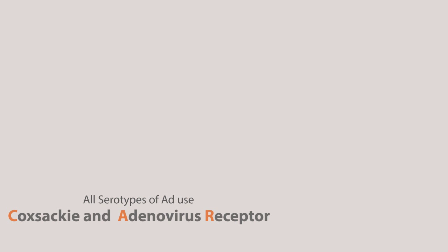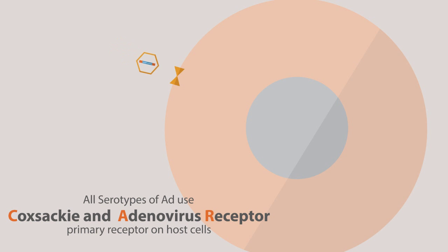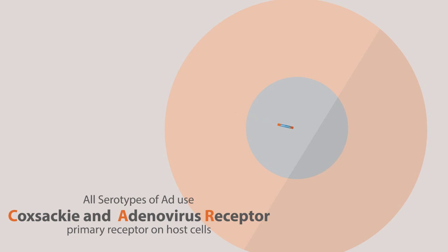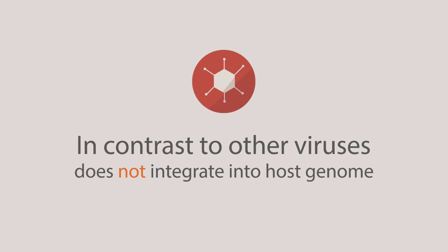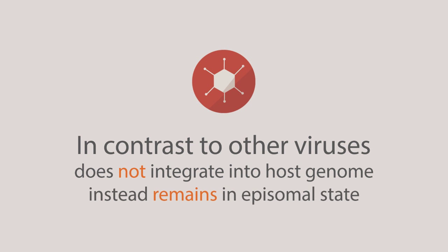All serotypes of adenoviruses use the Coxsackievirus and adenovirus receptor CAR as the primary receptor on the host cell. After initial attachment via CAR, the pentin binds to the integrin receptors located on the surface of the cell. The binding then induces virus uptake by the host cell via endocytosis. Once inside the host cell, the capsid of the virus is dismantled and the core protein-coated viral genome is transported into the nucleus. In contrast to other viruses, adenovirus DNA does not integrate into the host genome and instead remains in an episomal state.